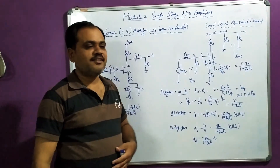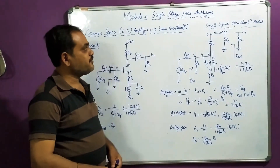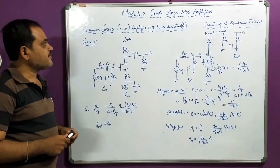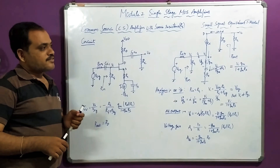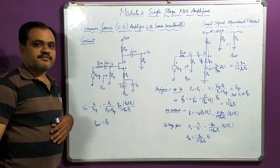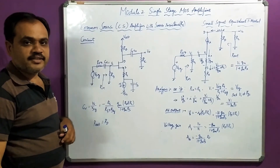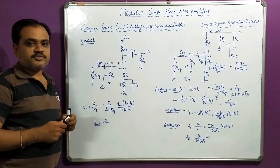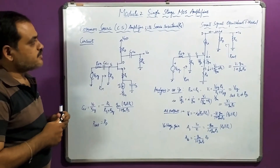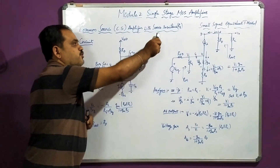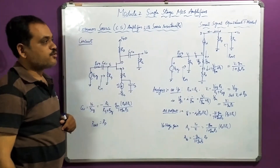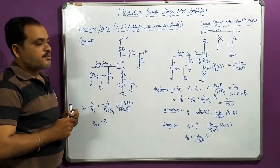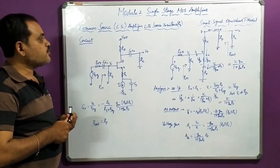Hi everyone. In today's session we are going to discuss the next topic of single-step MOS amplifier. In the last session we discussed the common source amplifier and obtained equations for input resistance, voltage gain, and output resistance. Now we will analyze the same common source amplifier — specifically, common source amplifier with source resistance.